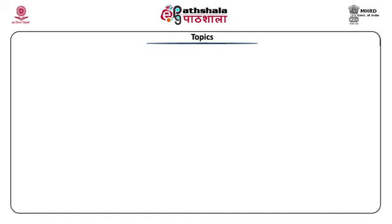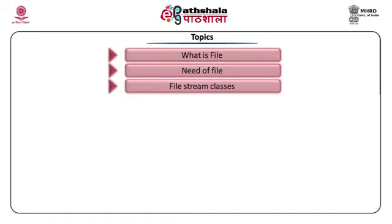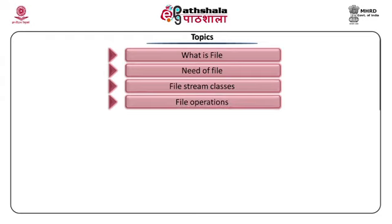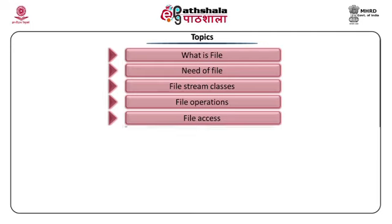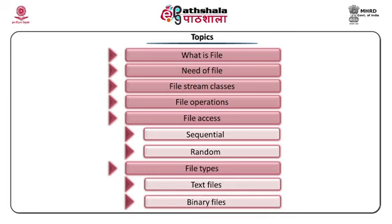In today's module, we will discuss what we mean by file, what is the need of file, how the file stream classes are derived from standard stream classes, what operations we can perform on files, how we can access files sequentially and randomly, and different file types like text files and binary files. We have already seen text IO and binary IO with standard streams; the same applies here with files.